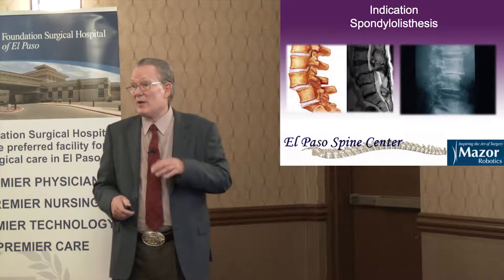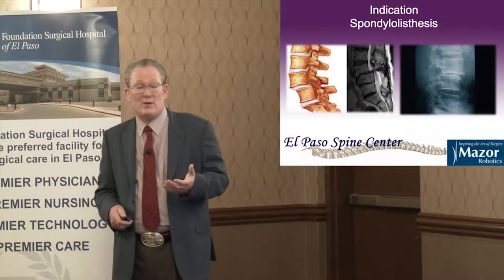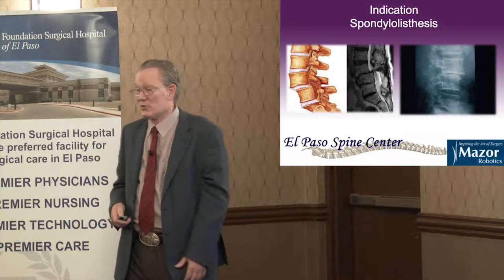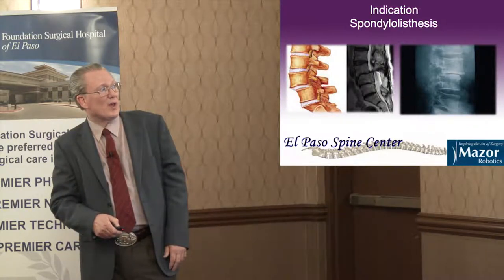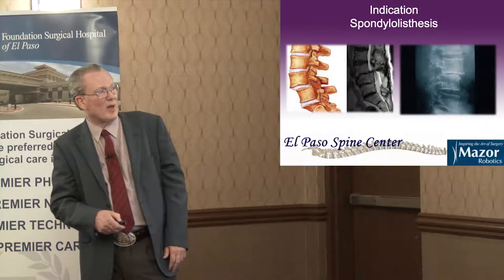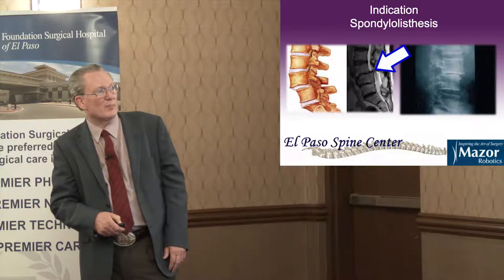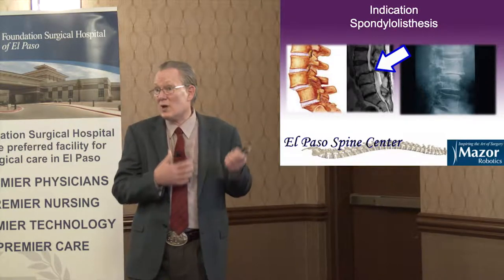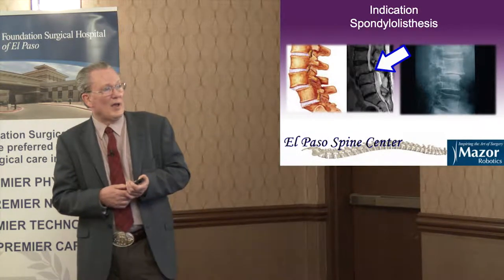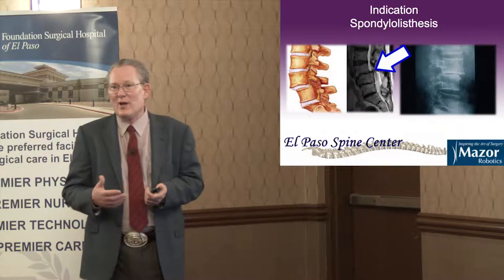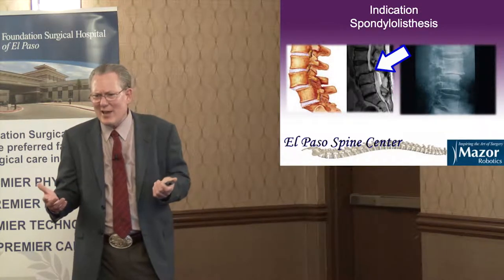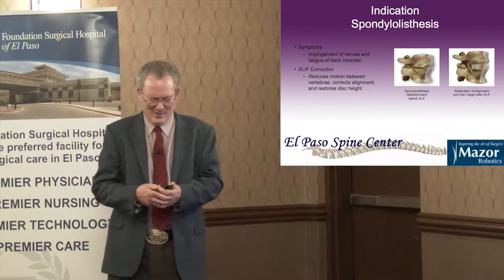The next condition is spinal malalignment, or spondylolisthesis — probably one of the most common things we see. Looking at an MRI, X-ray, and diagram, the bones should all line up but you can see one bone has slipped on the other. When it does that, it blocks off the spinal canal and is one of the most common causes of sciatica. Sciatica is pain in the back, buttock, and leg — I mention it a couple of times because I've gotten complaints at the end of the talk that I didn't define it.